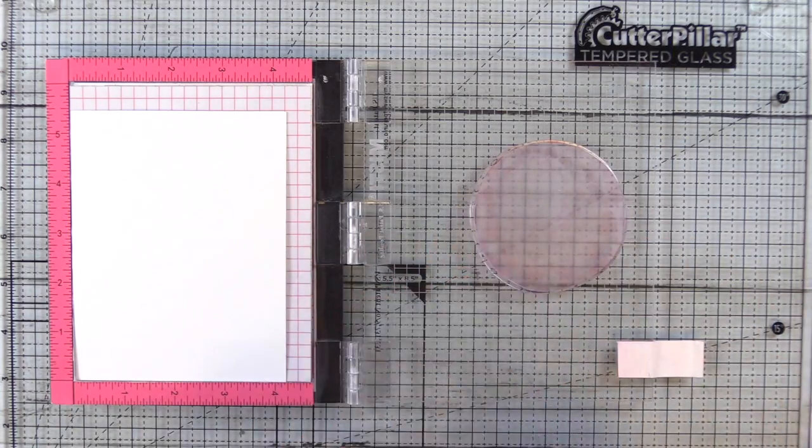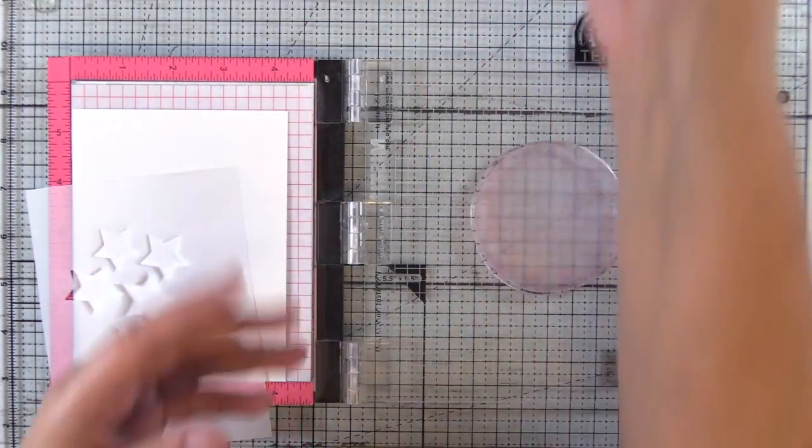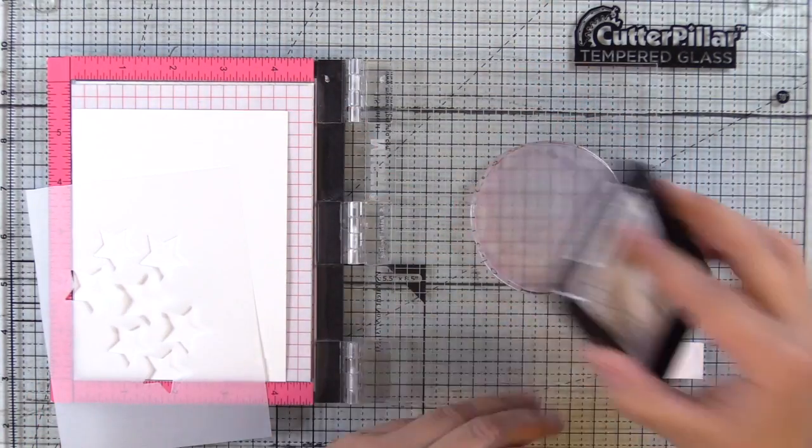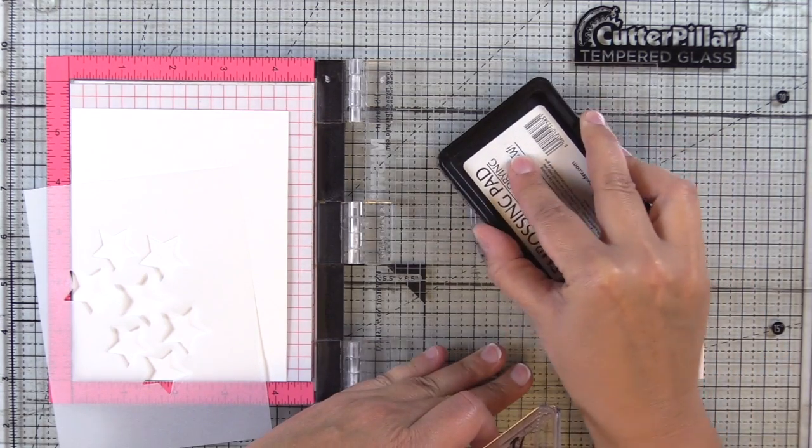I've gone ahead and cut my vellum stencil. I'm conditioning my solid stamp here. This is easier with a MISTI but you could do it with a stamp block, and I'm going to ink up the stamp with some embossing ink.